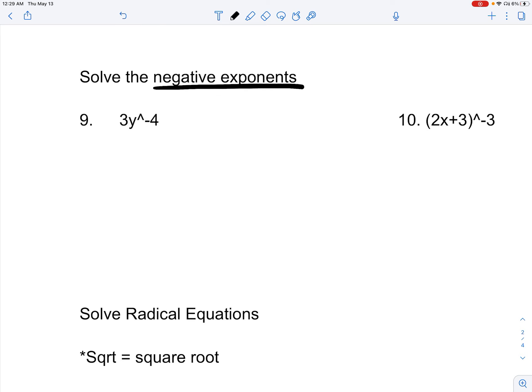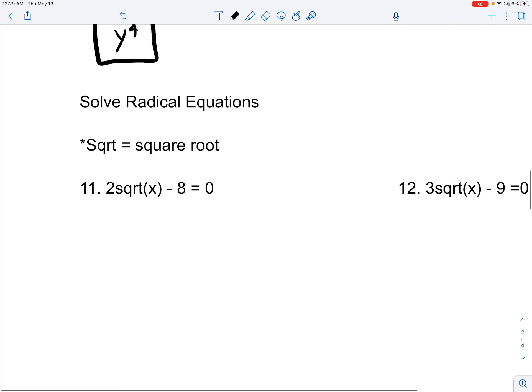Solving the negative exponents. Since a negative exponent only refers to this, because when you have a negative exponent, you have to find its reciprocal. But in this case, you would have 3 times 1 over y to the 4th. Since this y is the only one that is to the power of negative 4, 3 is not. So our answer would actually just be 3 over y to the 4th. Moving on.